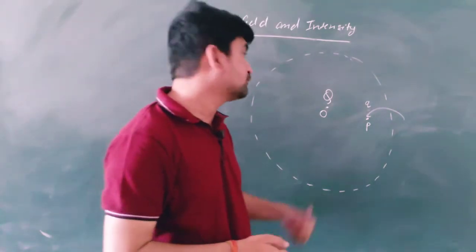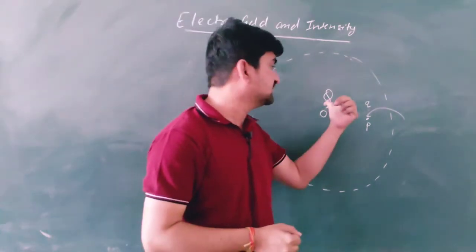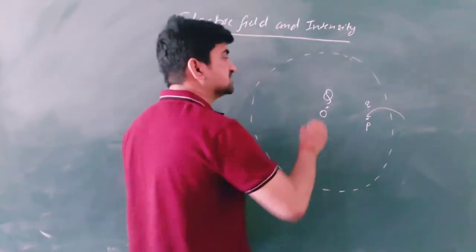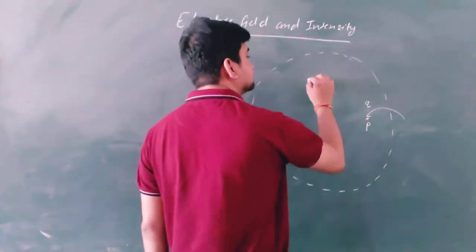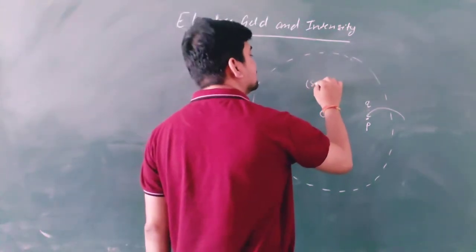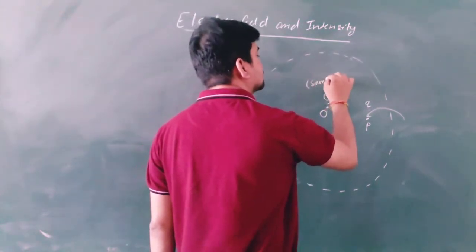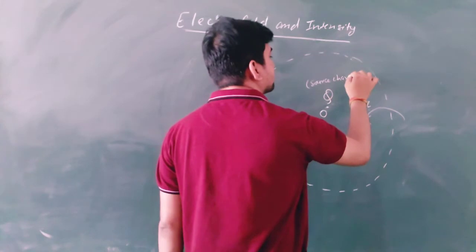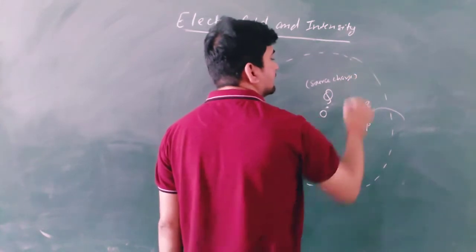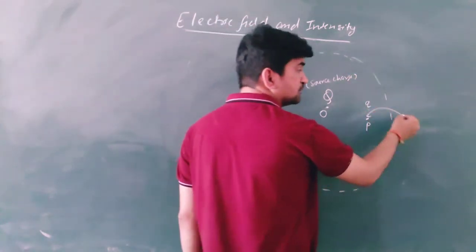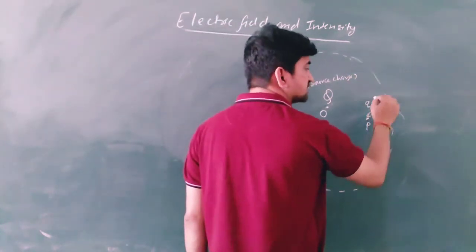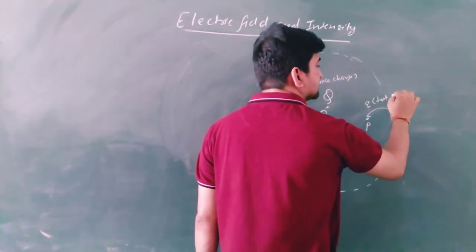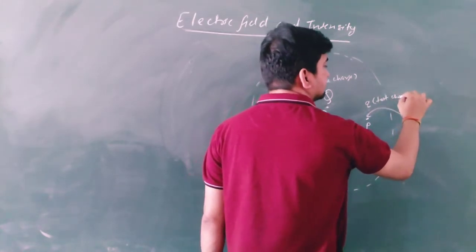The charge Q is called the source charge, and the other charge placed in the field is called the test charge, because this will tell us that a field exists and where the force is stronger.